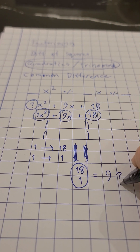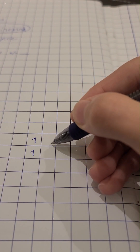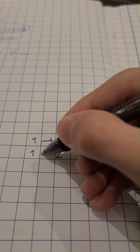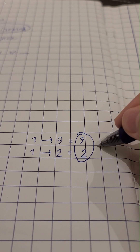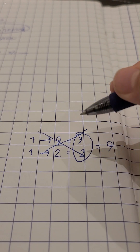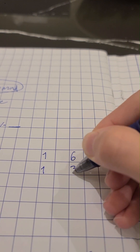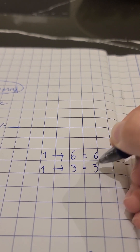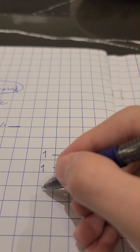Moving on to the next multiple, which is 9 and 2: 1 times 9 is 9, and 1 times 2 is 2. Can we get the number 9 from these two numbers? No. Moving on to the last multiple, which is 6 and 3. We go ahead and write these in so we can multiply them: 1 times 6 is 6, and 1 times 3 is 3. Can we get the number 9 from this? Yes. So these are the multiples that we need for the equation.